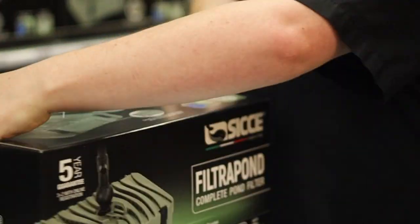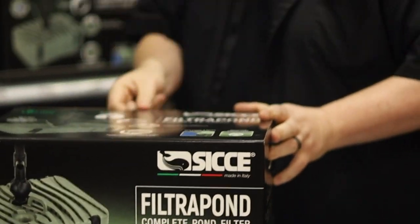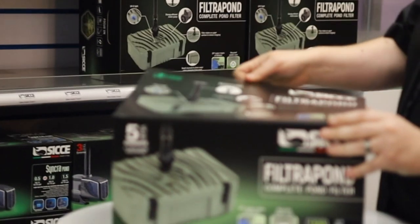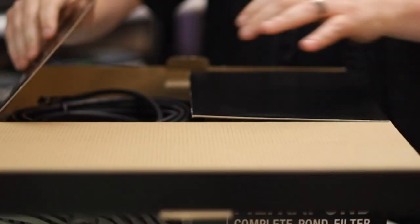If you're moving the filter pond to do some maintenance, you will find some drain water channels in the bottom of the base unit itself that simply allow the water to run out so you can transport and move it around without having excessive weight.